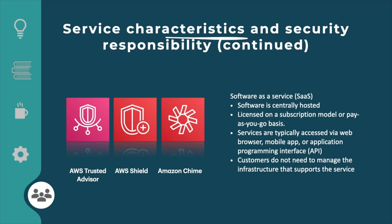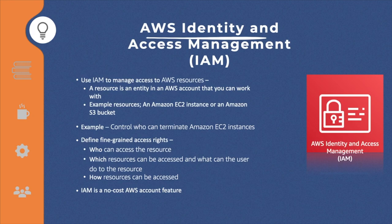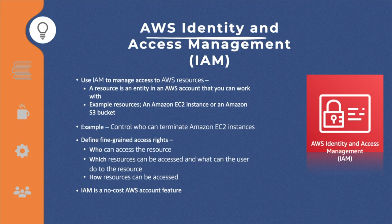Let us look at the first core service: AWS Identity and Access Management (IAM). IAM is the service used to create users and groups, and control who can access which resources and how — via the management console, web portal, or CLI. AWS IAM allows you to control access to compute, storage, database, and application services in the cloud. IAM handles authentication and enforces authorization policies to specify which users can access which services. IAM is a feature of your AWS account offered at no additional cost.